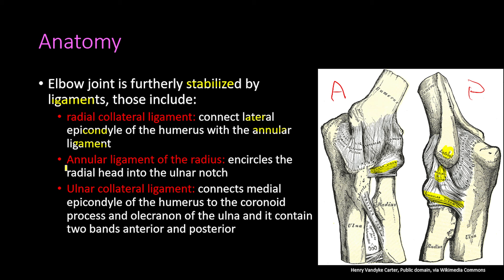Regarding the annular ligament of the radius: the annular ligament encircles the radial head into the ulnar notch. It starts on the ulna, goes around the radial head, and returns to the ulna, stabilizing the radial head within the ulnar notch.